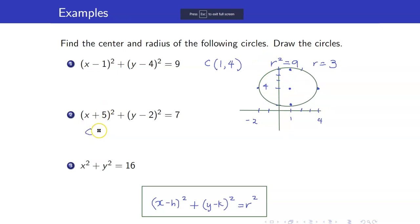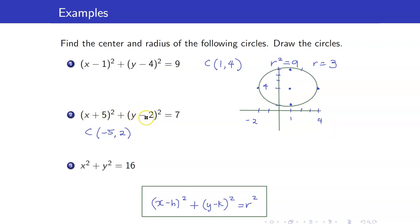Next, our center here is (−5, 2). Remember, it's X minus H and Y minus K, so you reverse the sign — this becomes negative 5 and positive 2. Your R squared is 7, so therefore your R is the square root of 7.